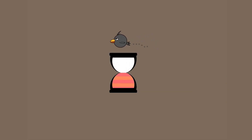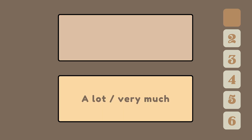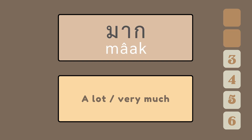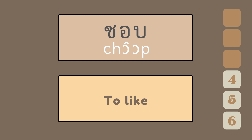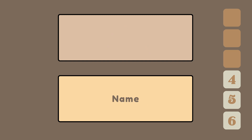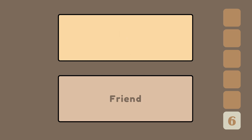Now, let's see if you remember how to say the words you have learned. How do you say what? — อะไร. How do you say a lot, very much? — มาก. How do you say to like? — ชอบ. How do you say name? — ชื่อ. What do you add to the end of a statement to make it a question? — ไหม. How do you say friend?